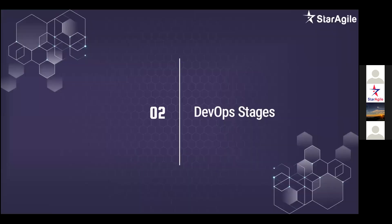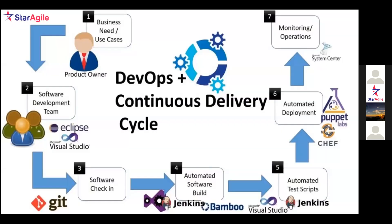Please park your questions and note them down so I can take them at the end of the session. Coming to the second part — DevOps stages. Looking at this diagram, this is the end-to-end DevOps continuous delivery cycle, which starts from business requirements all the way to delivery of the product. The first thing is we capture business requirements — that's the role of a Product Owner, a member of the Agile methodology.